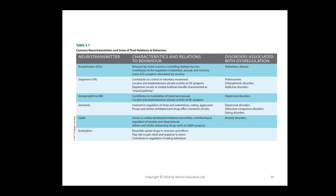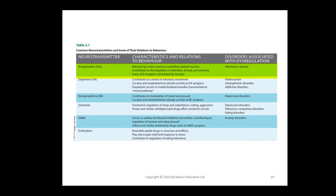Now let's look at common neurotransmitters and their relations to behavior. If you look at Table 3.1 on page 77 of our textbook, you will see an image that describes the various neurotransmitters, provides their characteristics, their relations to behavior, and describes disorders associated with dysregulation of each neurotransmitter.